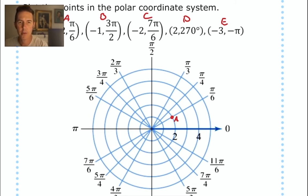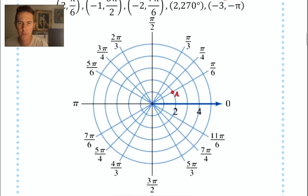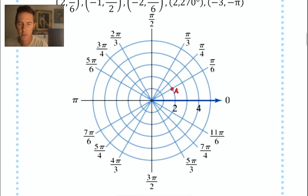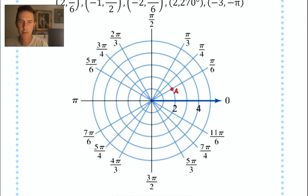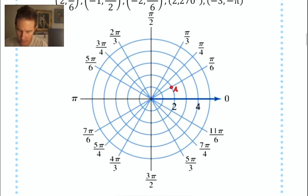Here's one with a negative r value. So we need to aim in the direction of 3 pi over 2, which is due south. So we're aiming down, and then with a negative r value, we're going to move one unit away from 3 pi over 2. So instead of going down, I'm actually going to move up. I'll put a point there and label it with a B.